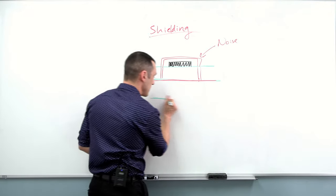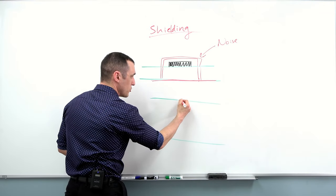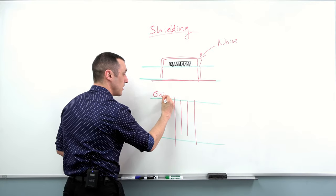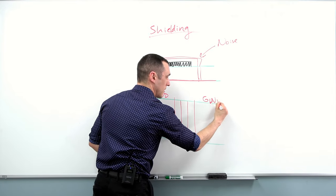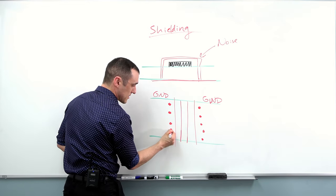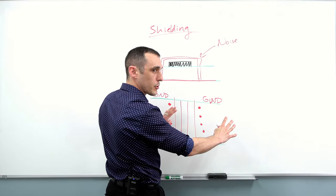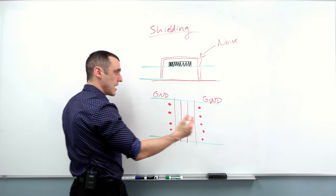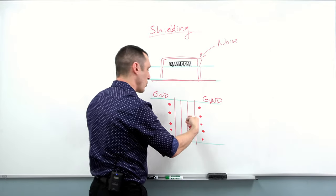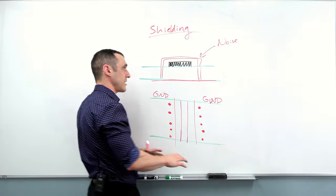Coplanar waveguides do the exact same thing. If you have a PCB and want to create a coplanar waveguide, you basically have a trace being routed with copper pour on both sides connected to ground, and then a bunch of vias lined up along here. This essentially creates shielding by enclosing the trace with grounded copper, making it very difficult for noise to induce a signal on the trace and create noise that gets read out by a receiving component.